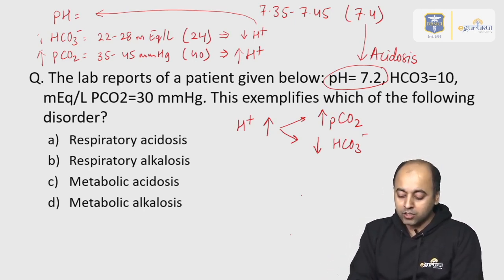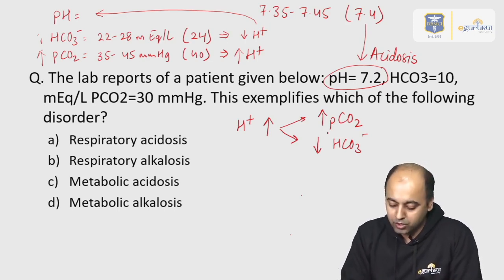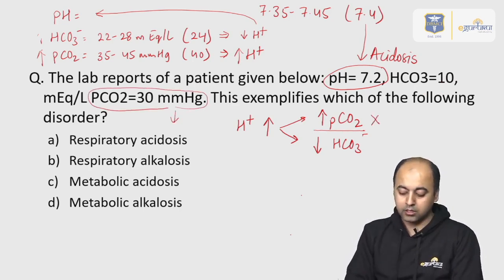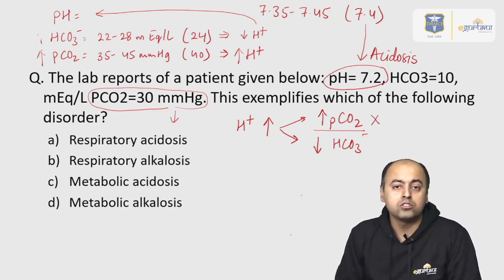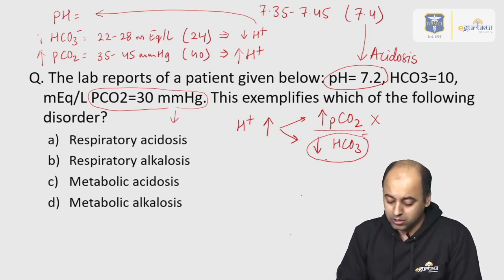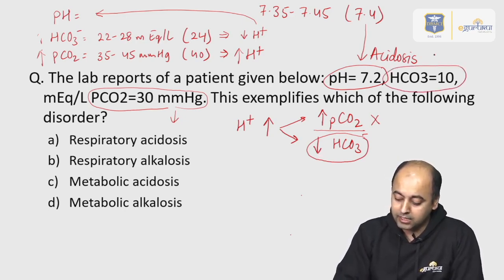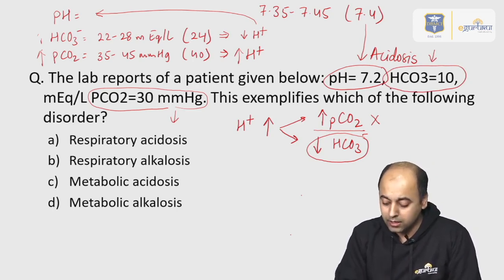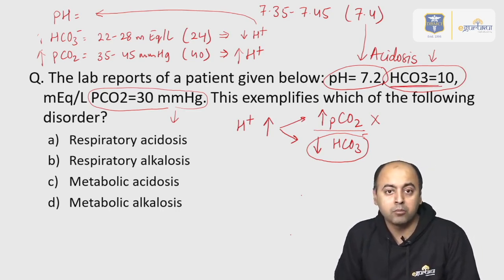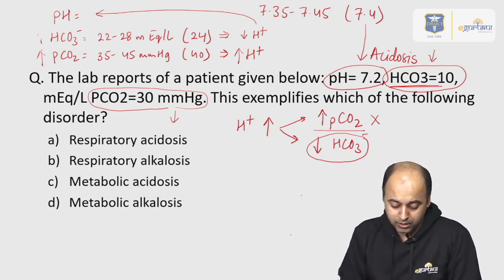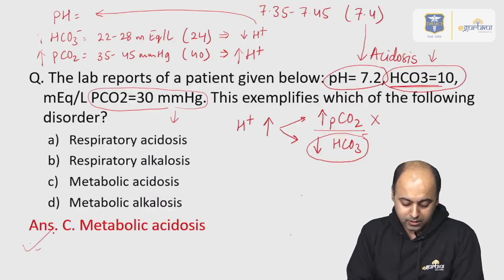Looking at the question values: pCO2 has not increased, it has decreased — so it is not the cause for increased H+. However, bicarbonate has decreased, and decreased bicarbonate increases H+. This is the primary cause of the acidosis. Because there is a drop in bicarbonate level, the diagnosis is metabolic acidosis.